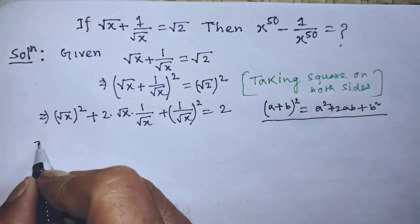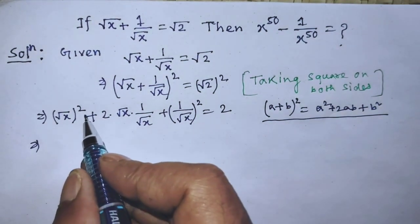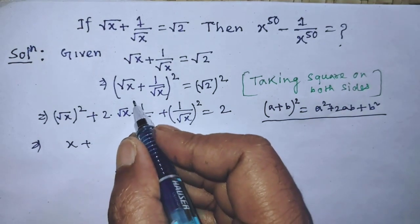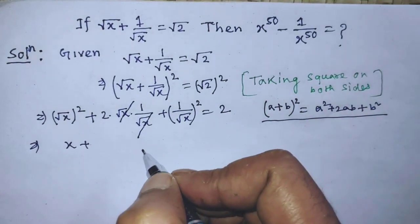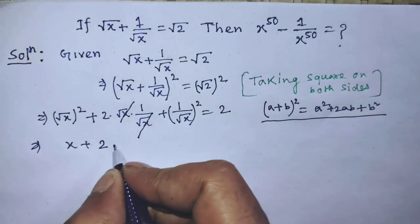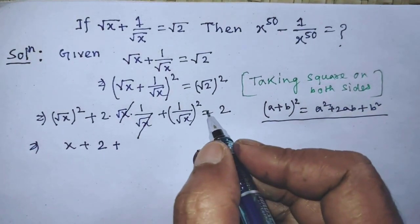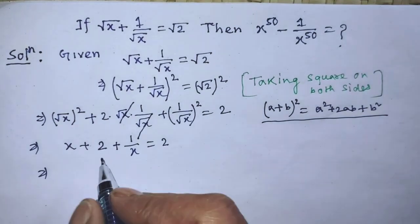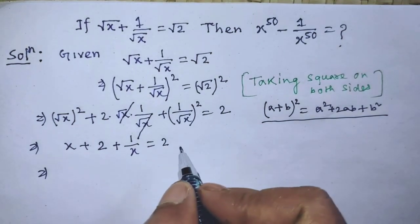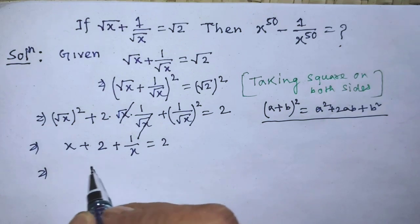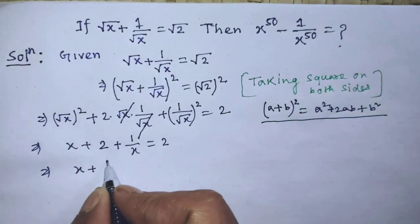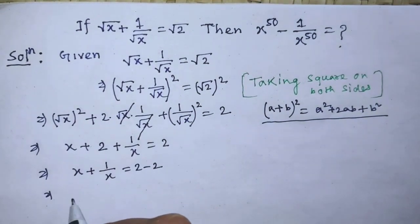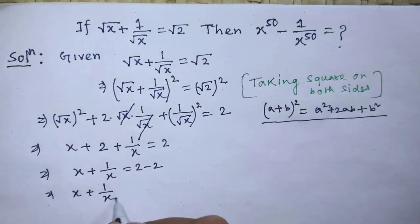After simplifying, square root of x whole squared gives x. In the second term, square root of x cancels from numerator and denominator, giving 2. And 1 over square root of x whole squared gives 1 over x. So we get x plus 2 plus 1 over x equals 2. Transposing 2 from the left-hand side to the right-hand side, we get x plus 1 over x equals 2 minus 2, which gives x plus 1 over x equals 0.